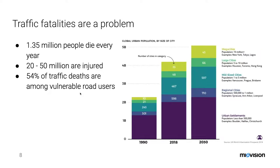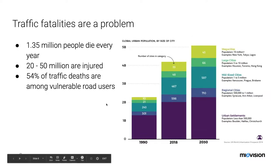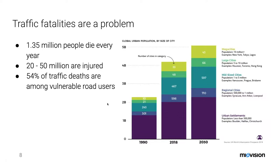Amongst those, 54% of traffic deaths are among our vulnerable road users. These statistics are international data points. If we zoom into the United States, this translates to about 40 to 45,000 traffic fatalities every single year — the equivalent of a Boeing 737 going down every other day. That type of statistic is completely unacceptable in any industry. The sad reality is this problem is only going to get worse. The UN is showing that every single week, three million people are flocking into our cities, and they're projecting that by 2030, about two thirds of the world's population will live in a city.